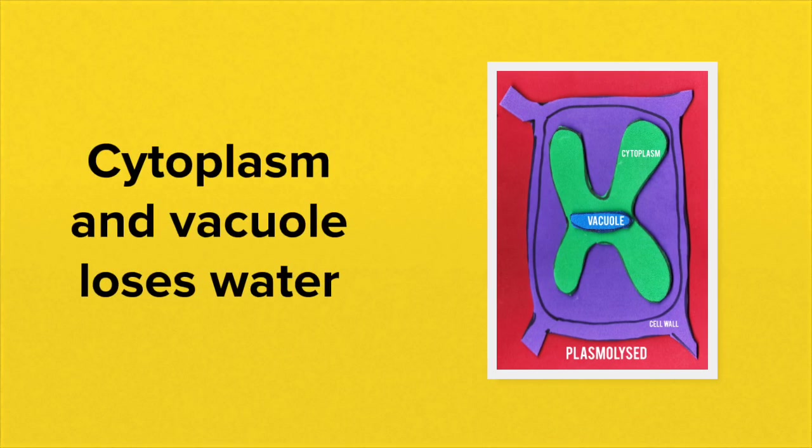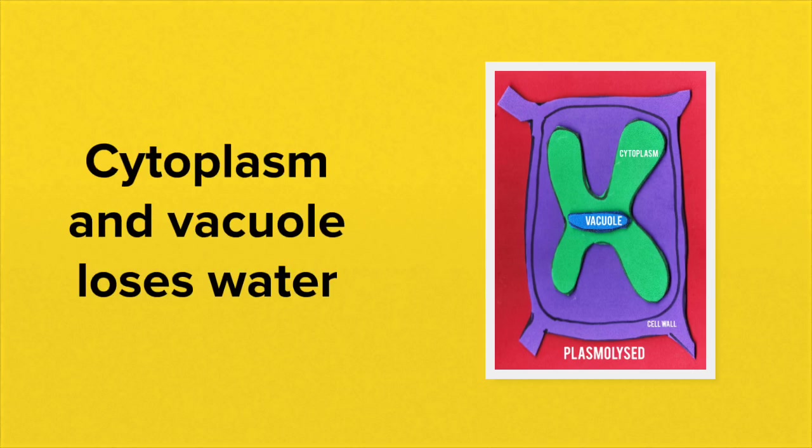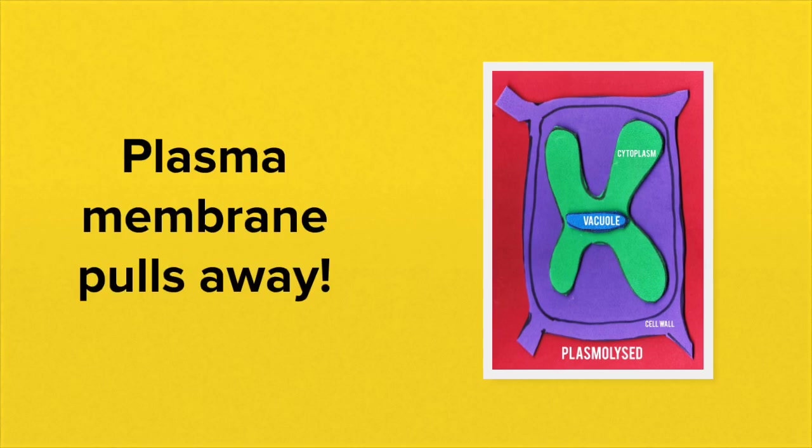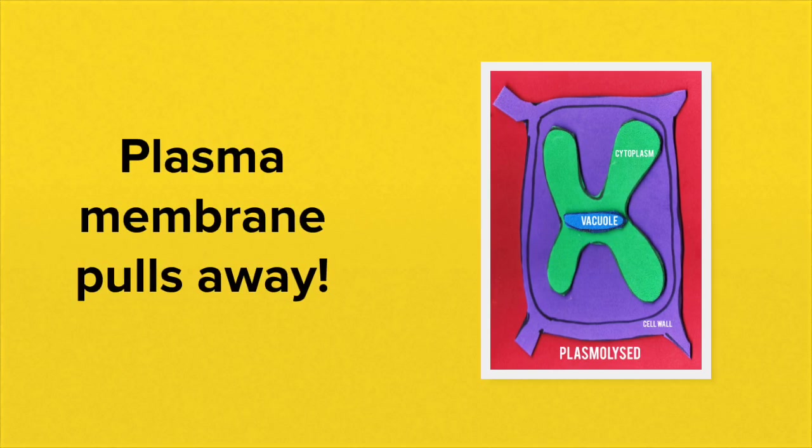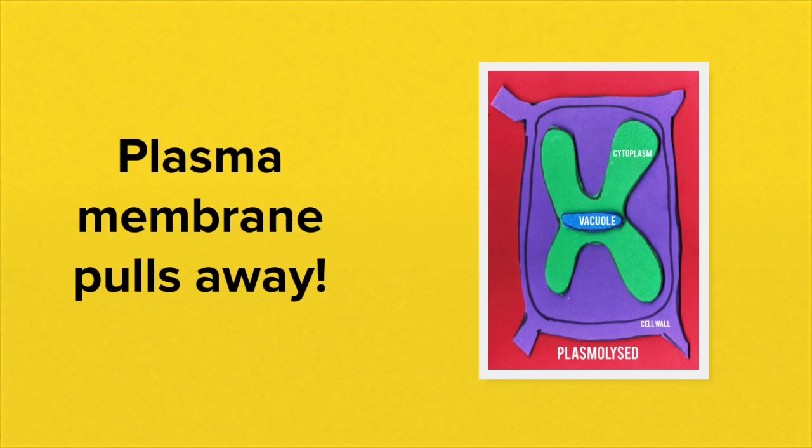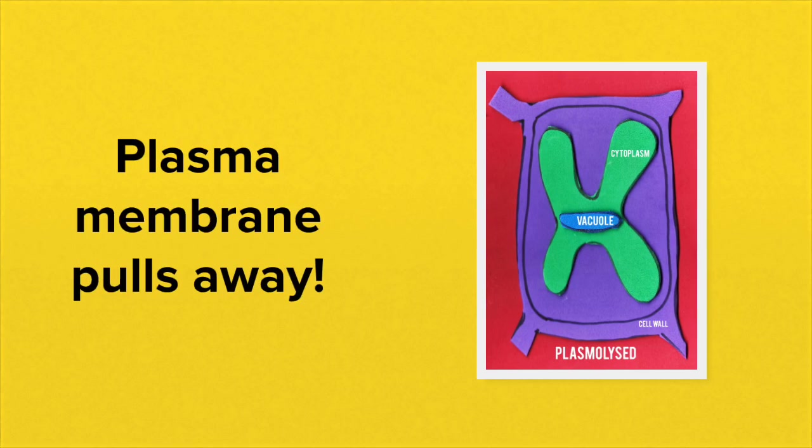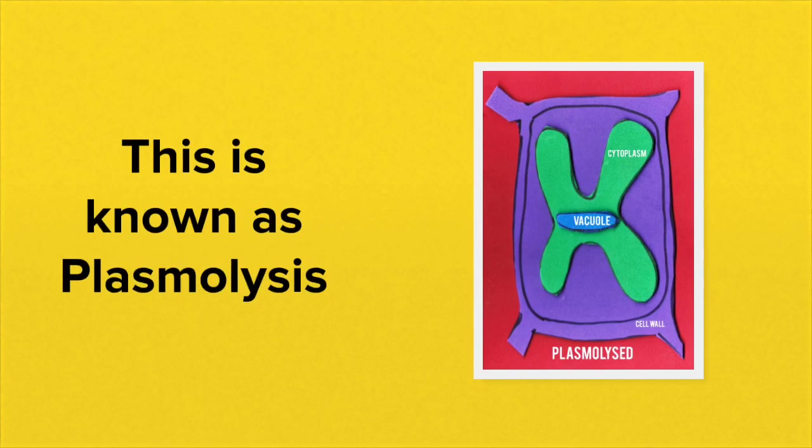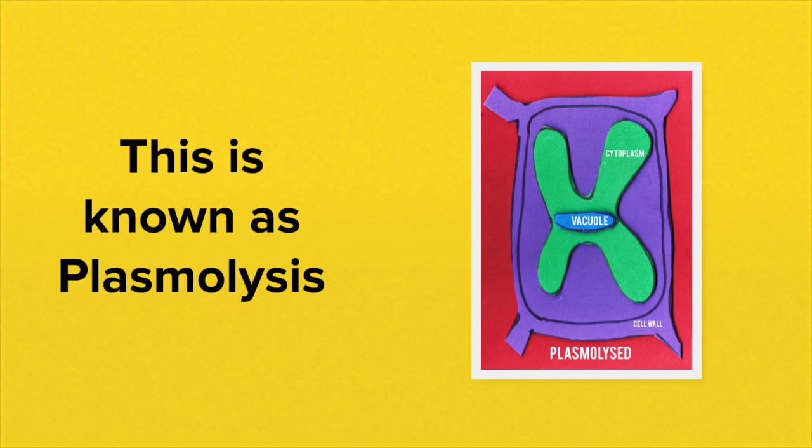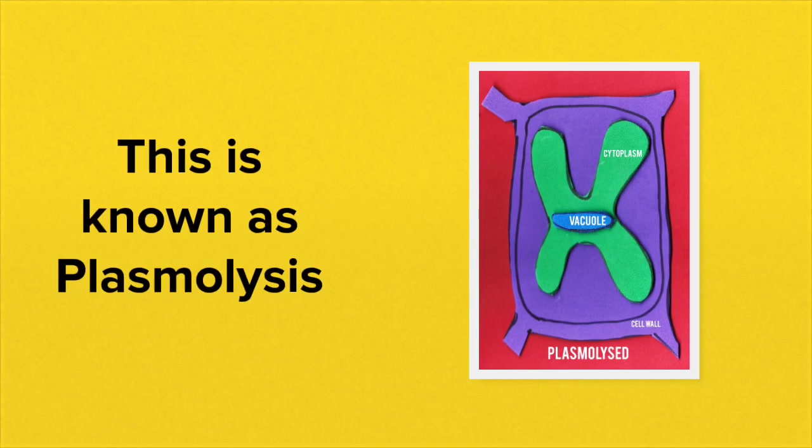The large vacuole loses water and shrinks, and so too does the cytoplasm lose water. The plasma membrane pulls away from the cell wall, and the space between the cell wall and that plasma membrane will fill up with that hypertonic solution. This is known as plasmolysis, and the cell is said to be plasmolyzed.